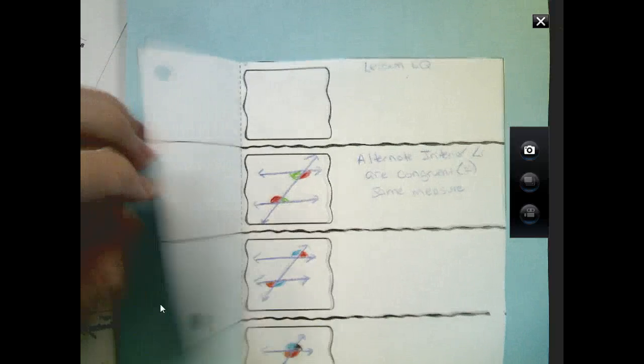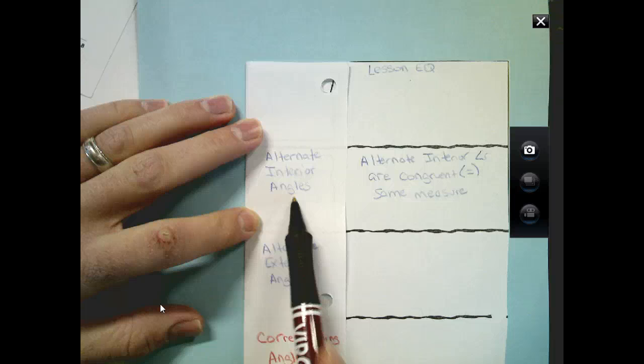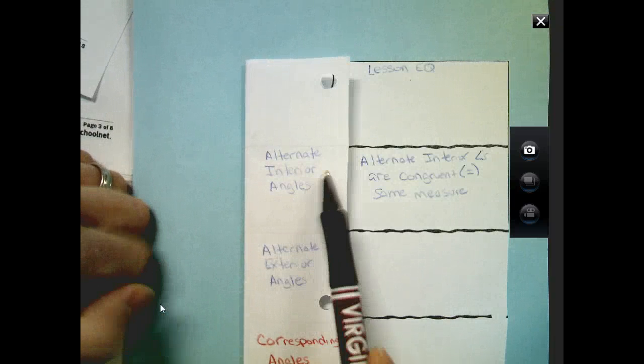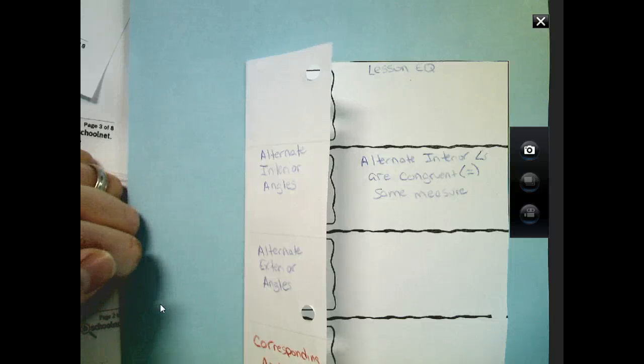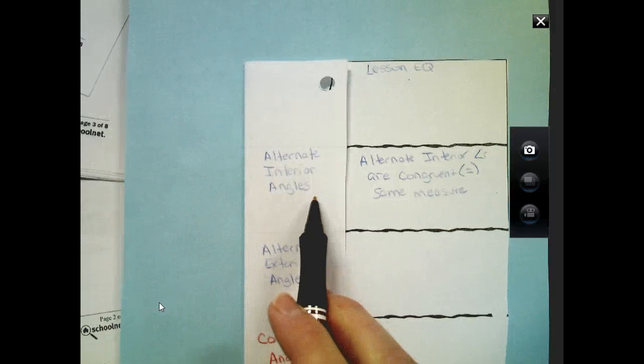All right, on your first one, and if you want here, you can put alternate interior angles. That would be the first one. And as you write it, do each one of them in a different color. That way, again, I love to color code everything. It just makes it easier when I go back to try to find it as a resource.